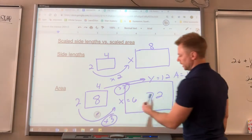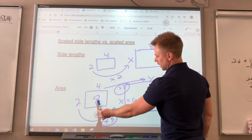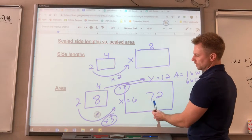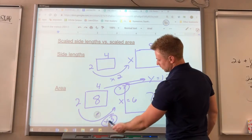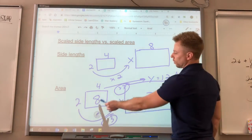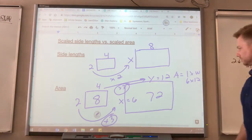So the scaled area isn't 8 times 3 to get 72, you actually have to do 8 times 3 times 3, or 8 times 9 to get 72.